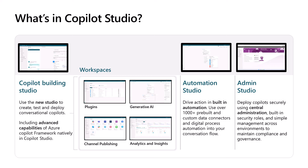One of the things that differentiates Copilot Studio is it also comes with an automation studio, also known as Power Automate. Power Automate gives you the ability to kick off business process automation while also providing thousands of connectors that allow you to connect to different APIs, backend data sources, and kick off business process automation as part of that as well.